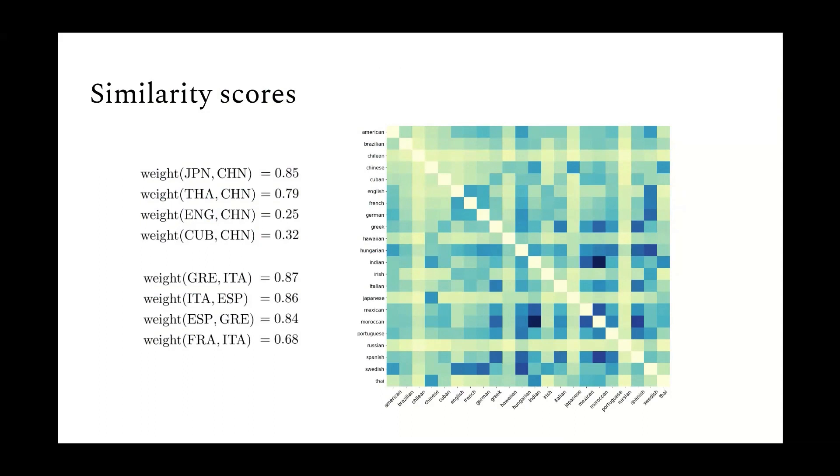So now what we can do is that if we measure the distance between these embeddings, we can create a heat map like this, which shows the similarities between the different national cuisines. So the darker blue squares mean they're more similar, and the lighter yellow slash greeny colored ones are less similar. For example, as you can see in the top left here, the weight between China and Japan is quite high, as is China and Thailand. But the weight between England and China, which have very dissimilar cuisines, is much lower. And then on the bottom left-hand corner there, I'm just showing some of the Mediterranean countries just to show how they all have reasonably high similarity scores.